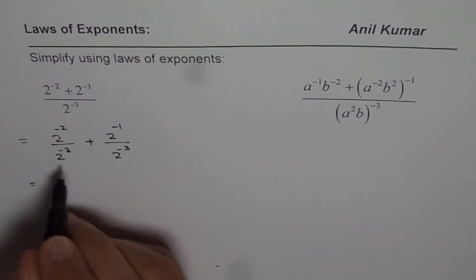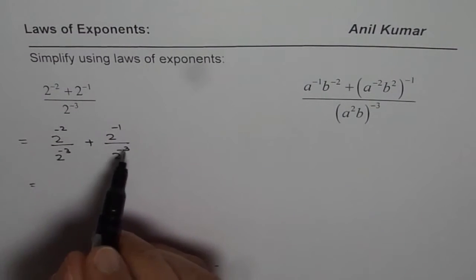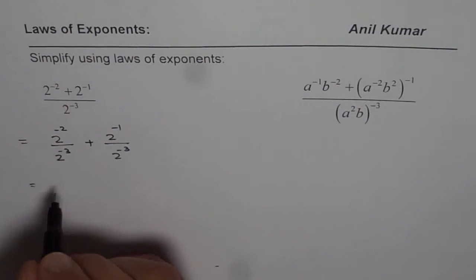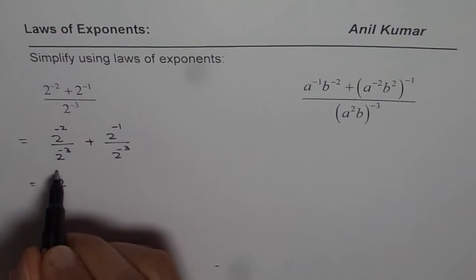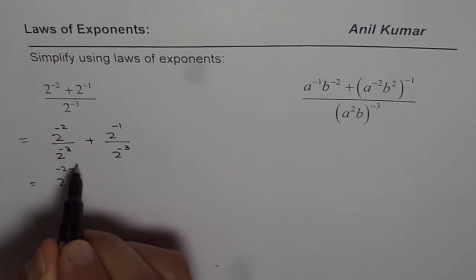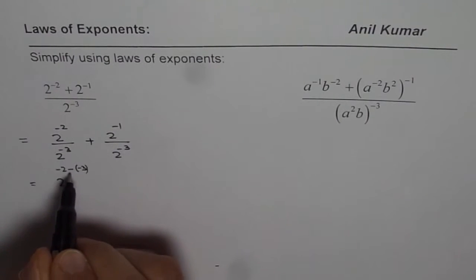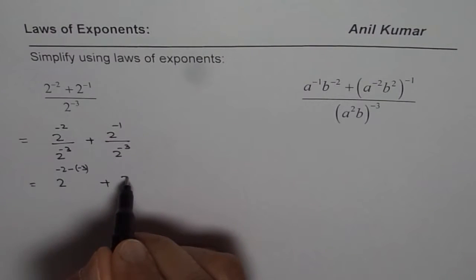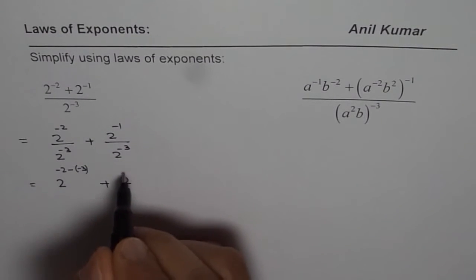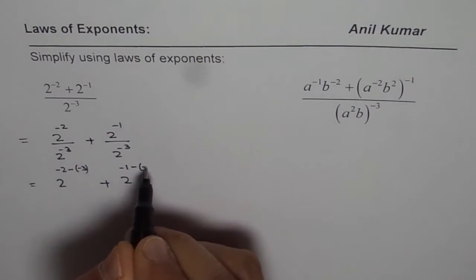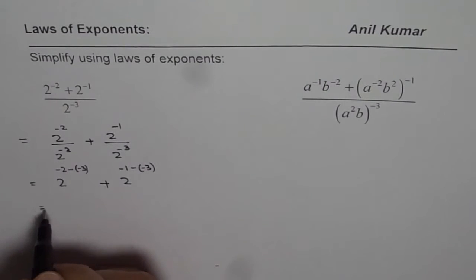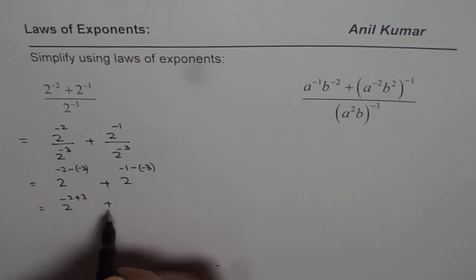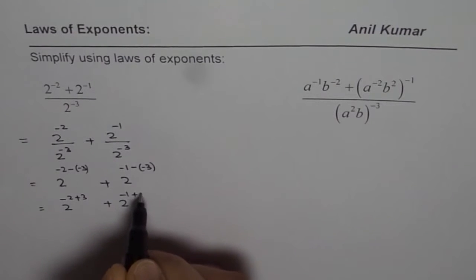Now we will simplify each of these two terms using the laws of exponents. Since these are the same base, we can write 2 to the power of minus 2 minus of minus 3. Dividing means subtracting exponents, and the exponent was negative 3. The second term becomes 2 to the power of minus 1 minus minus 3, giving us 2 to the power of minus 2 plus 3, plus 2 to the power of minus 1 plus 3.